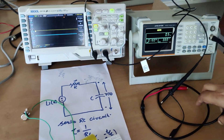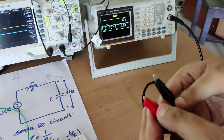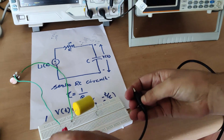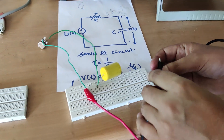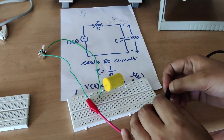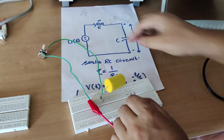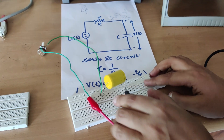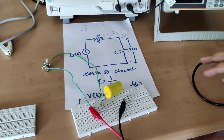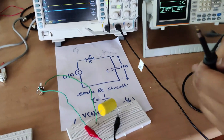Now we have to give the step input. I will give the step input from here. You can see this is the probe — I will take the positive and the negative. The positive is connected to the resistor end, so I will connect the positive to the resistor end. The negative of the input is connected to the capacitor end, so I will connect the negative terminal with the capacitor. The circuit is now complete and the supply is connected.